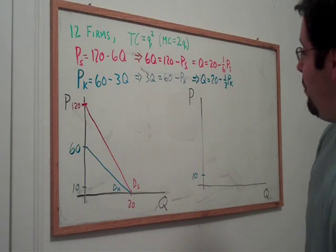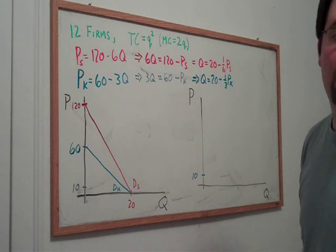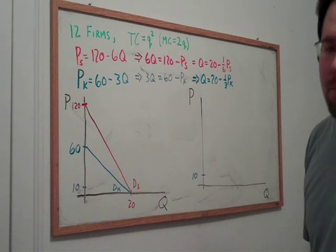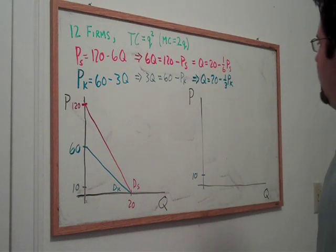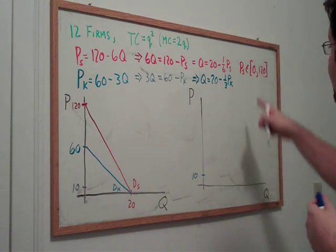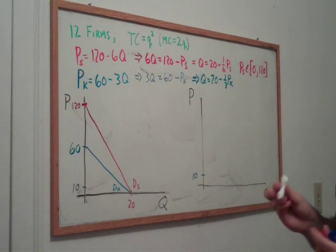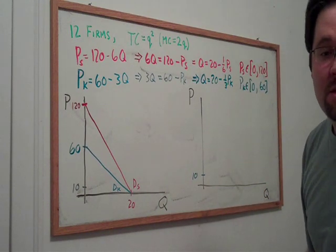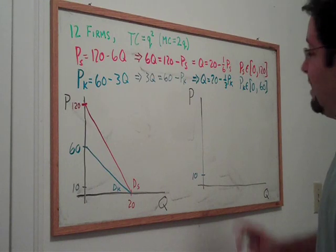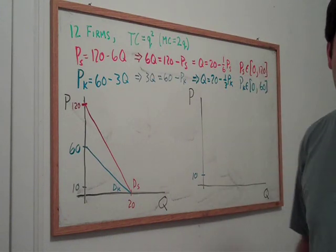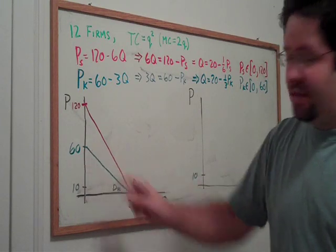Here are the quantities and when it is valid for these, we can go ahead and add. It is valid when these quantities are bigger than zero and when the prices are bigger than zero. So this red demand curve applies for prices between zero and 120. The blue demand curve applies to prices between zero and 60. So when we add these two demand curves, we are really only adding over the prices between zero and 60.